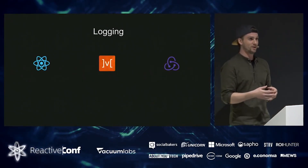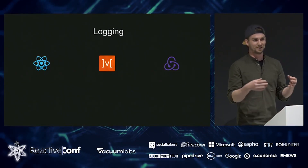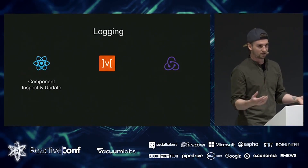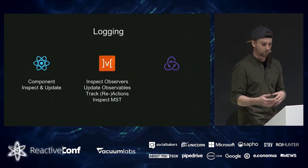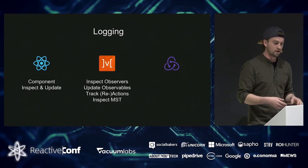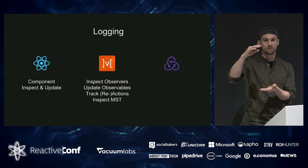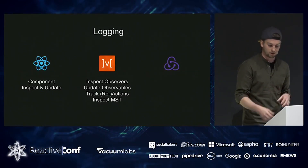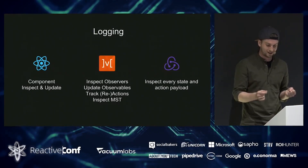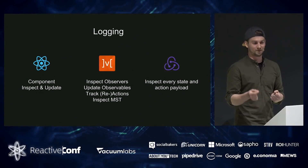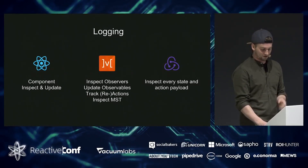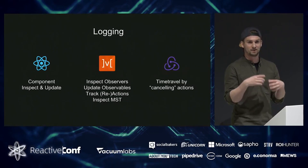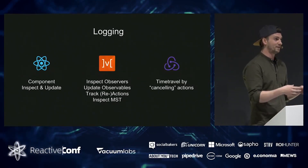The main topic whenever you ask why to use Redux over MobX is logging. With React dev tools you can inspect and update the state and props of any component. With MobX dev tools you can inspect all observers and observables, track reactions and actions, see a nice log of anything that happened, and inspect the MobX state tree — which is really great for larger applications. With Redux logging you can inspect every state and action payload at any time. You have time travel where you can go back to a certain state of your application and see what it looked like. You can also import other states into your application.